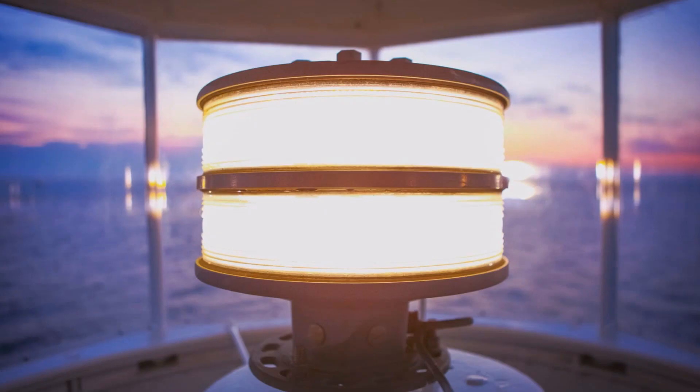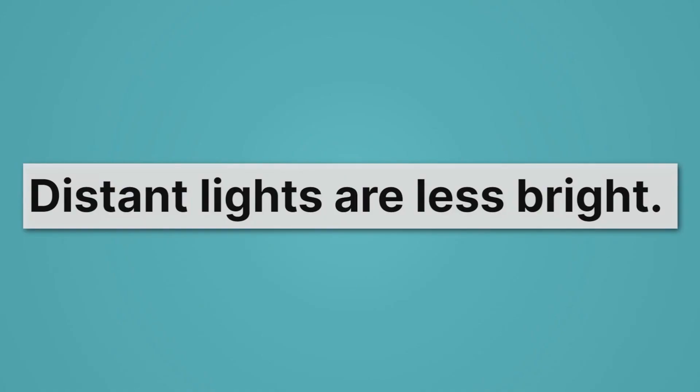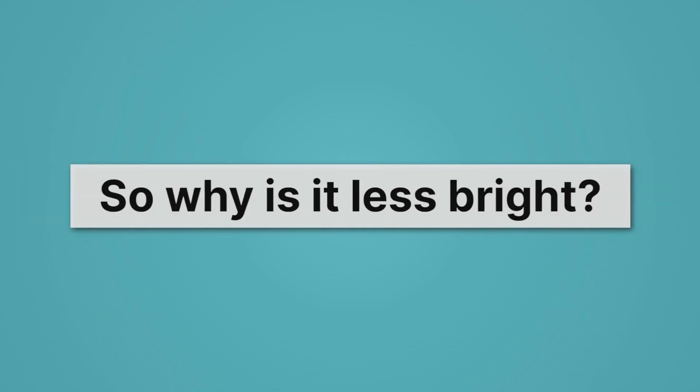Here is a light bulb of a lighthouse. It's really bright. It's meant so that ships, even at a great distance, can see the light. As we get farther away though, it does get less bright. And we're familiar with this observation. Distant lights are less bright. Here's the thing though. The light didn't go anywhere. That light bulb is still emitting all the same amount of light, and none of it disappeared as it traveled to you. So why is it less bright?